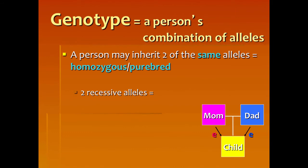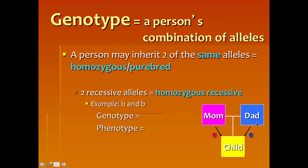What if they still have the same alleles but both are recessive lowercase letters? Then we call that homozygous recessive. We still use the word homozygous because homo means same. The genotype is little b, little b, and the phenotype would be blue eyes — he got blue eyes because his mother gave him the blue eye gene and his dad gave him the blue eye gene.